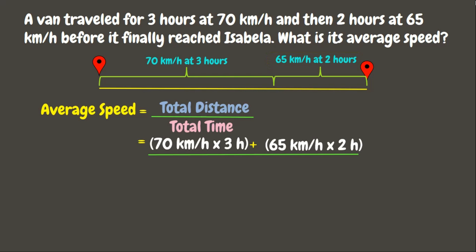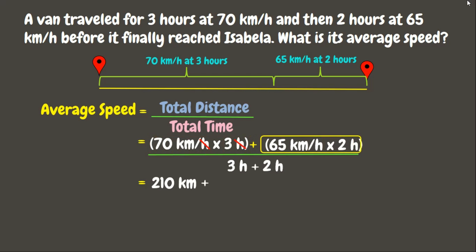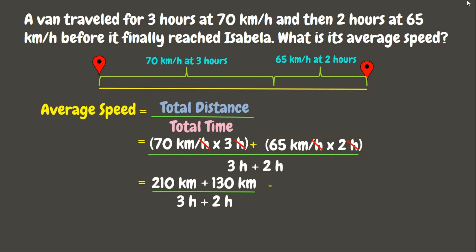Now let us solve. We have 70 km/h × 3 hours — we can cancel hours — so that is 70 × 3 = 210 kilometers. Next, 65 km/h × 2 hours = 130 kilometers. Adding them up: 210 kilometers + 130 kilometers = 340 kilometers. And 3 hours + 2 hours = 5 hours.